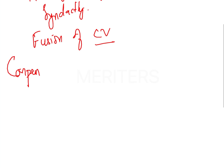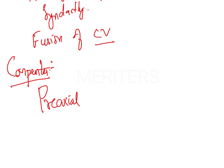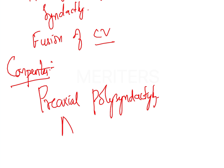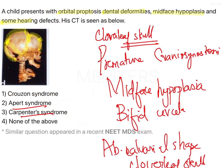Carpenter syndrome is also very similar to Apert and Crouzon. The key difference in Carpenter syndrome is pre-axial polysyndactyly. All other features, including craniosynostosis, are very similar. The only distinguishing feature from Apert is pre-axial polysyndactyly, and Carpenter syndrome is autosomal recessive.